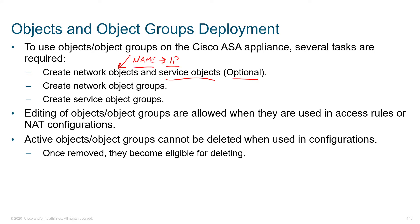It doesn't have to be one-to-one. You could say 'accounting department' and just put the subnet of your accounting department. Once you name these, you can use those names inside of your configurations. And if you want to make it more scalable, you can nest those objects inside of groups, and then you can even nest groups inside of other groups.